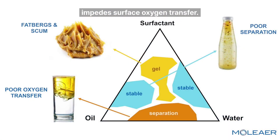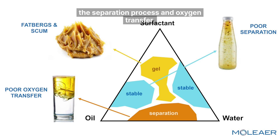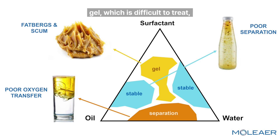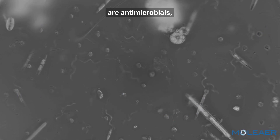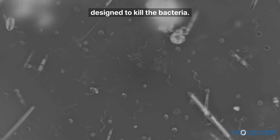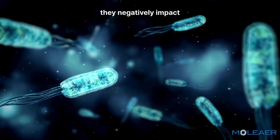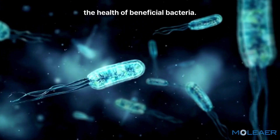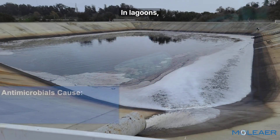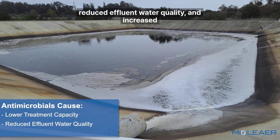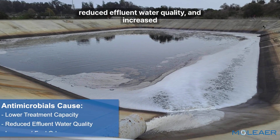FOG creates a layer that impedes surface oxygen transfer. The presence of surfactants emulsifies FOG, further hindering the separation process and oxygen transfer. In extreme cases, it creates fatbergs or hard gel, which is difficult to treat and in lagoons creates scum layers. Some surfactants are antimicrobials, designed to kill bacteria. In high concentrations, they negatively impact the health of beneficial bacteria, causing lower treatment capacity, reduced effluent water quality, and increased foul odors.